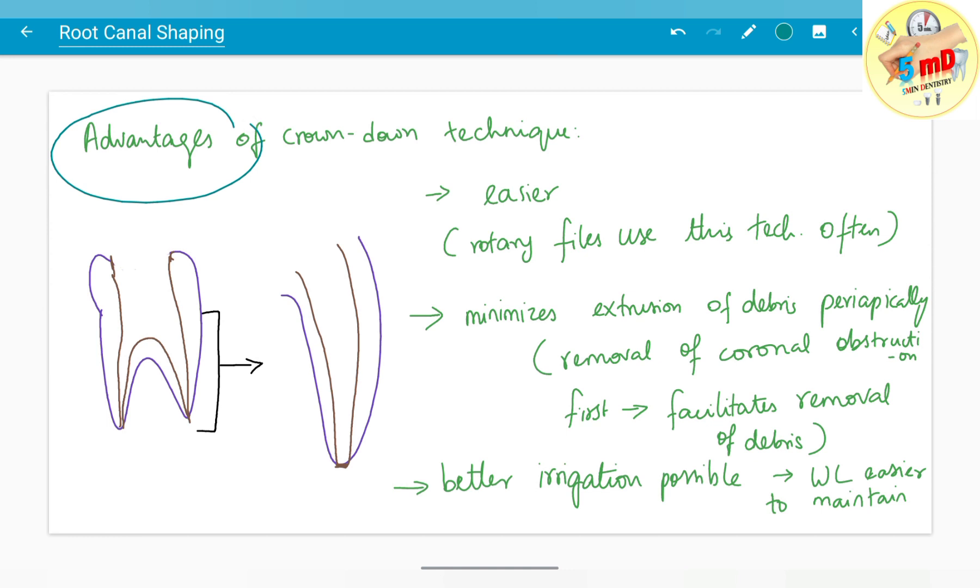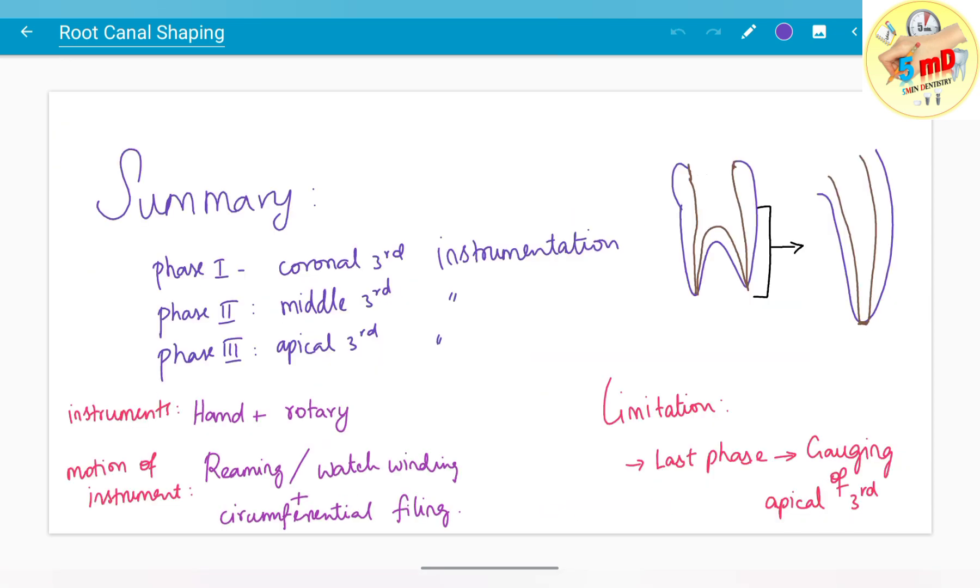Main advantages of crown down include: it's a relatively easier procedure, rotary files often use this technique, it minimizes extrusion of debris periapically by removing coronal obstruction first, the coronal part is wide enough to facilitate copious irrigation and better debris removal, and working length is maintained. The limitation is that there could be gauging in the apical third region since it's the last phase, which should be carefully prevented.